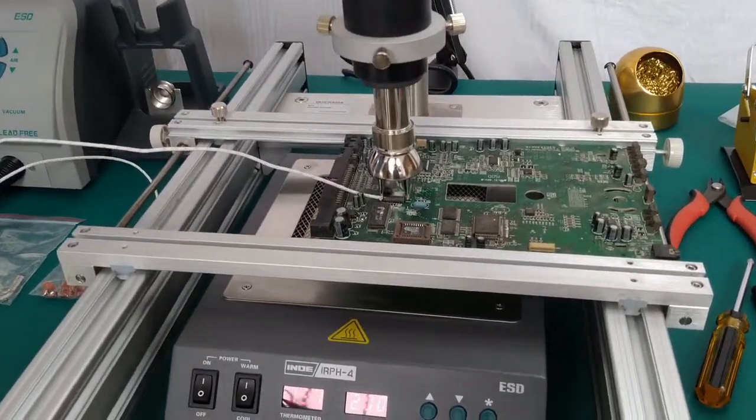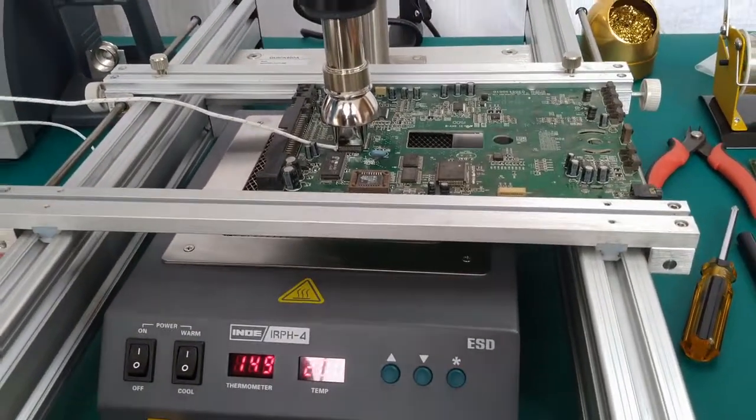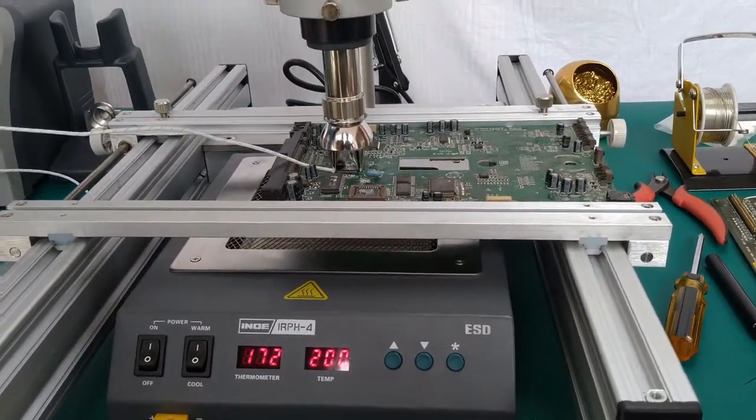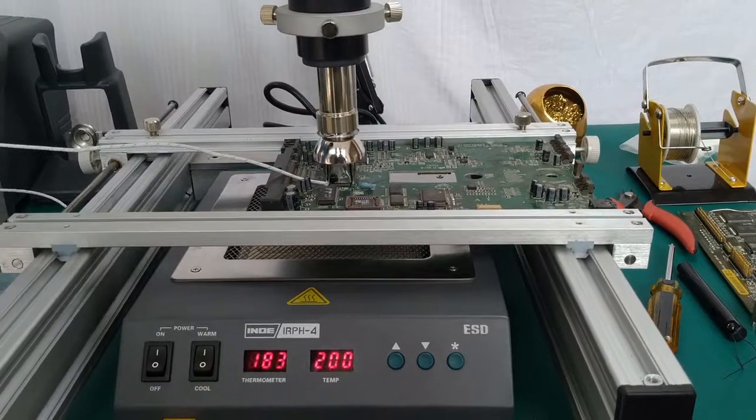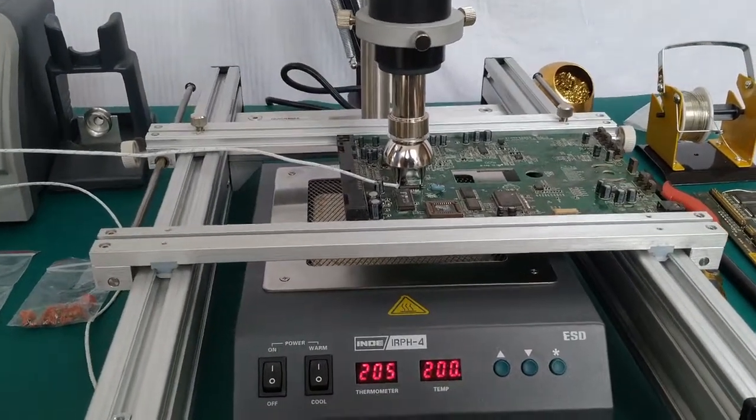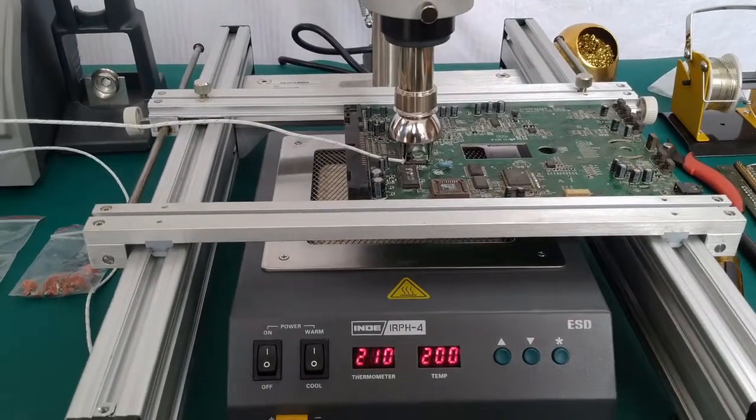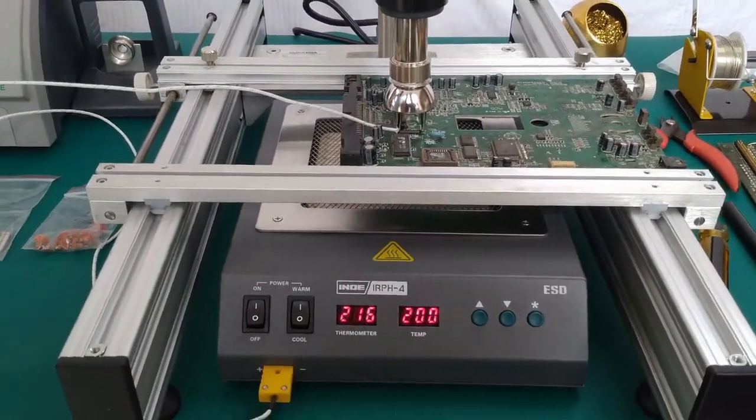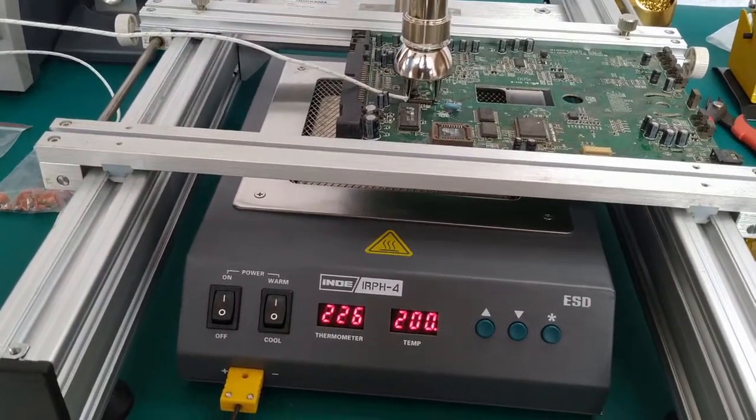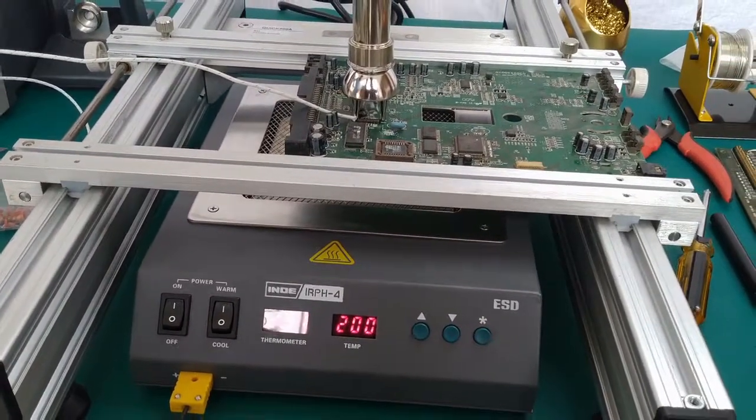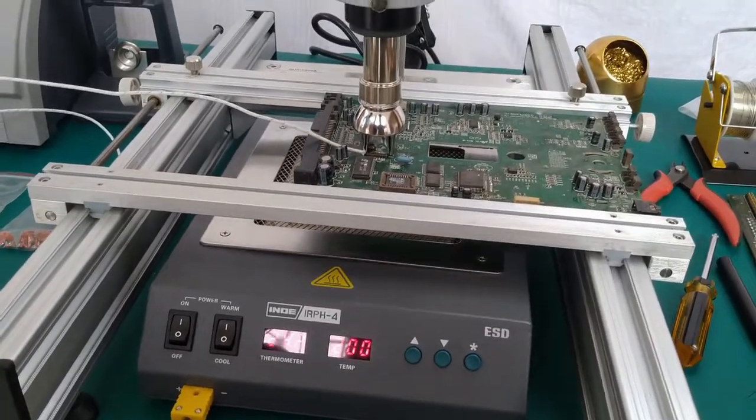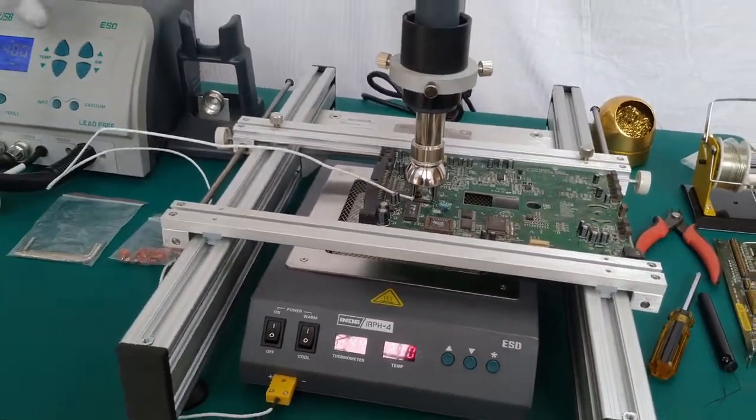The hot air is flowing from the upward direction and from the bottom, the heating preheat plate is generating heat. We will see when the thermocouple measures the temperature of the IC and it achieves 250 degrees Celsius or more, then we will activate the vacuum and lift the IC.